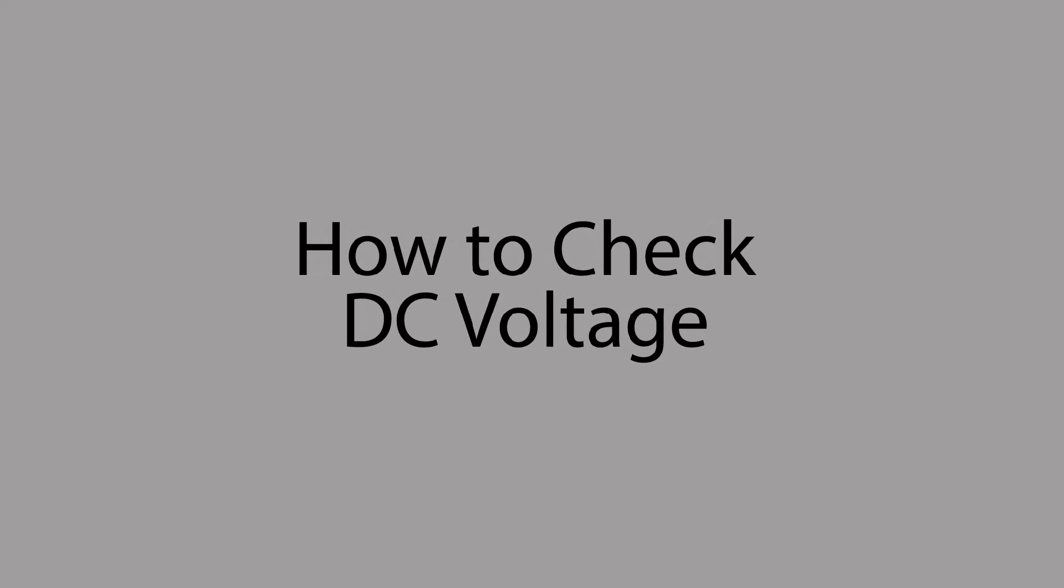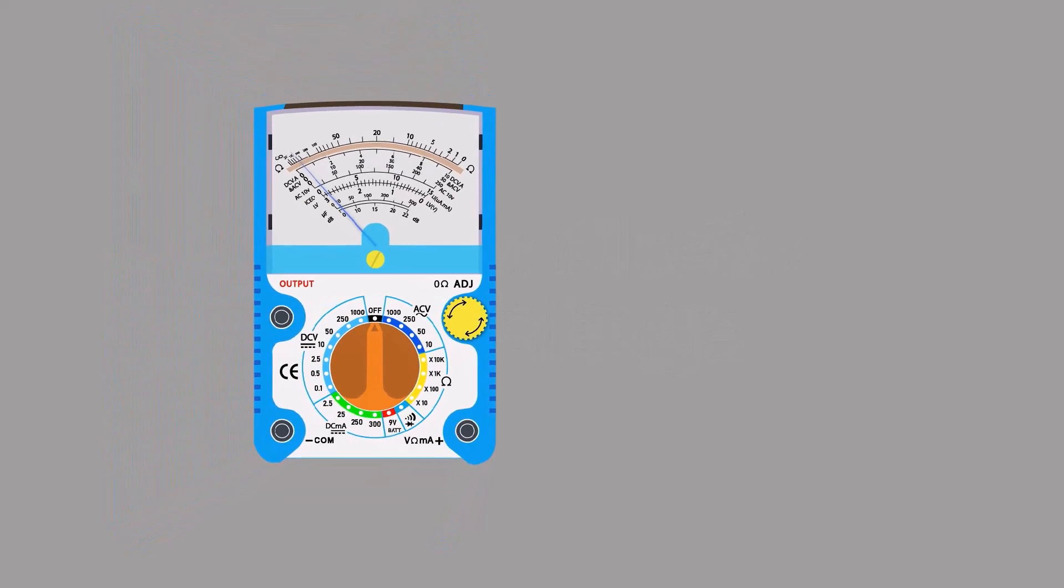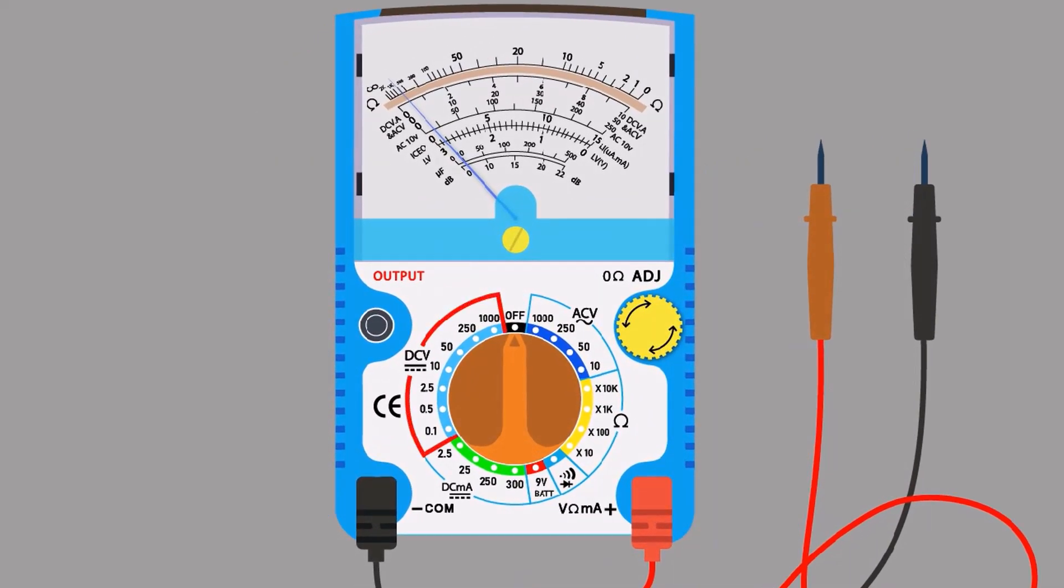How to check DC voltage. We have a multimeter to measure DC voltage. Connect the black probe of the multimeter with the common port and the red probe with the positive port. The blinking line shows the DC voltage section. The arrow shows the DC volt range which we can measure.